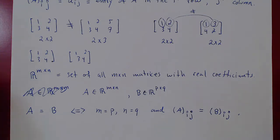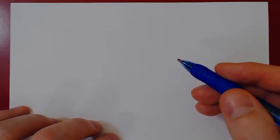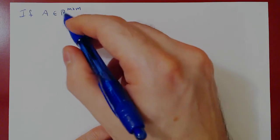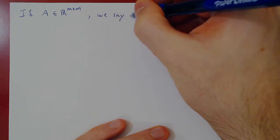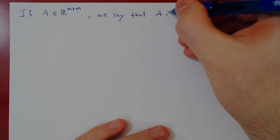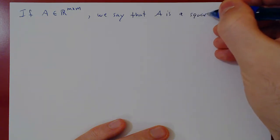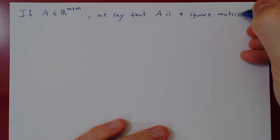Let's look at a few more definitions — special matrices. The first definition is a square matrix. A square matrix obviously will be a square, so it has the same number of rows as columns. If A belongs to the set of all m by m matrices, A consists of m rows and m columns, and we say A is a square matrix.